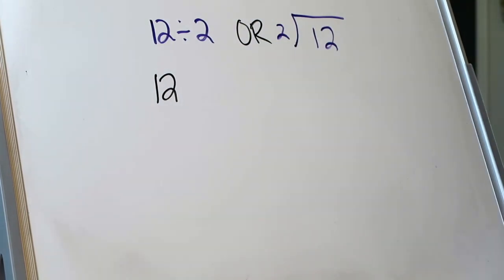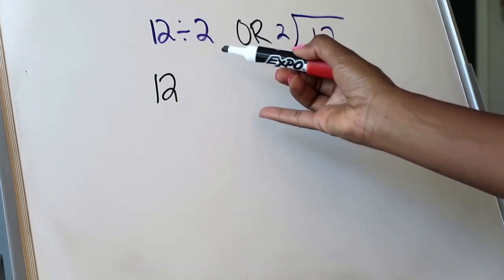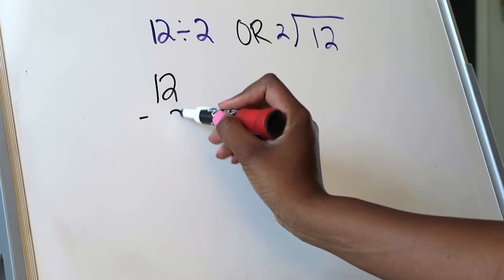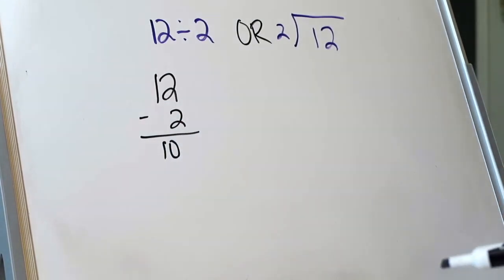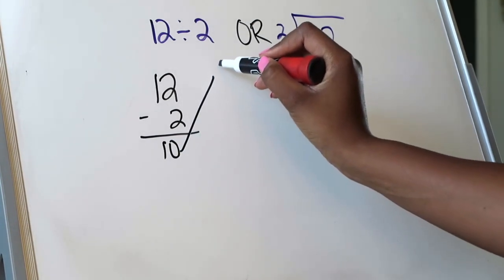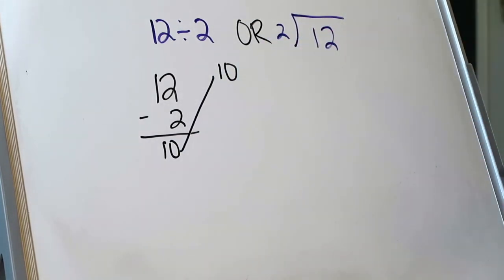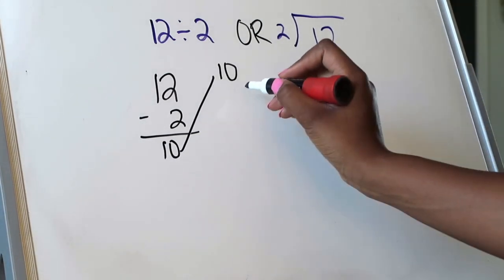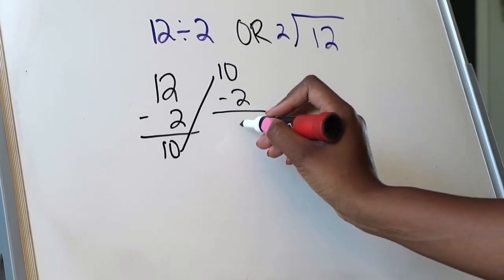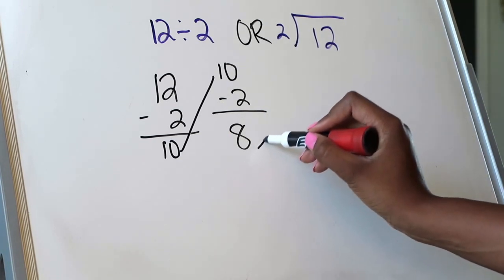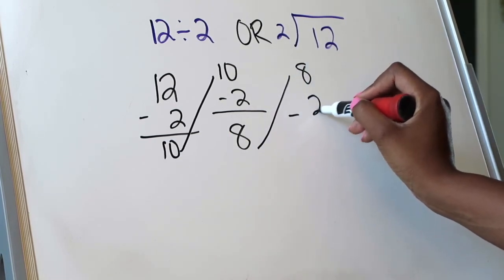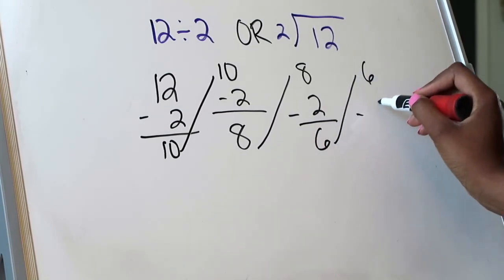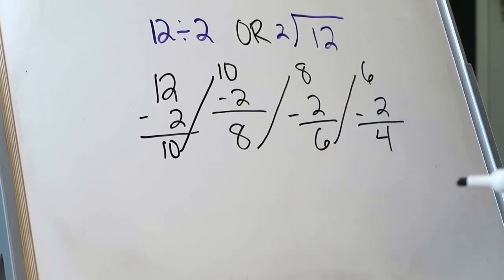Our dividend is 12, so I'm going to be subtracting from 12, and I'm going to be subtracting 2 from 12 until I get to the point where my answer is 0. So I'm going to do 12 minus 2 — that's 10. Then I draw a line to show the next thing I'm subtracting from is 10, no longer 12. Now I'm taking the difference and subtracting 2 from that. 10 minus 2 is 8. Then keep going: 8 minus 2 is 6.